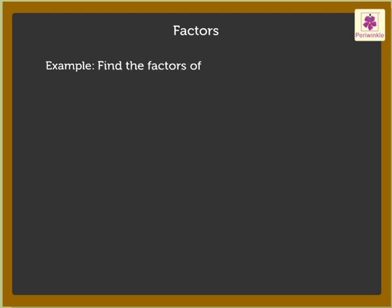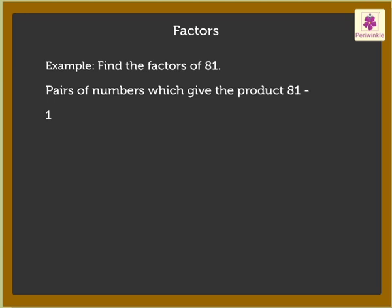Let us solve one more example: find the factors of 81. The pairs of numbers which give the product 81 are 1 times 81 equals 81.